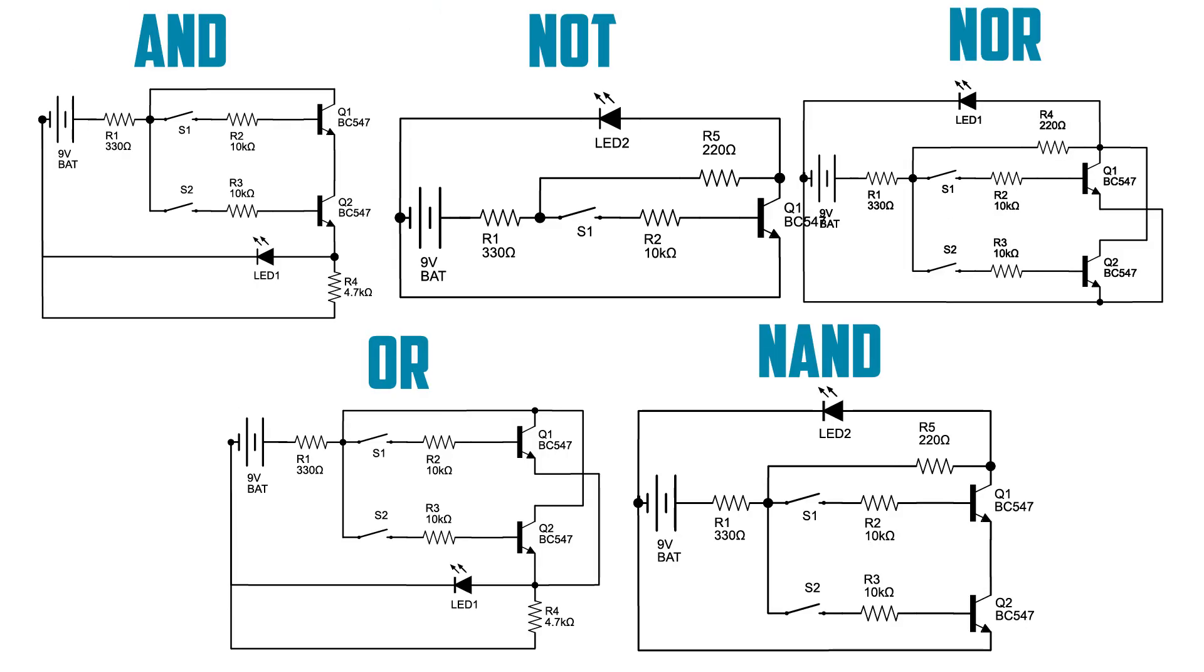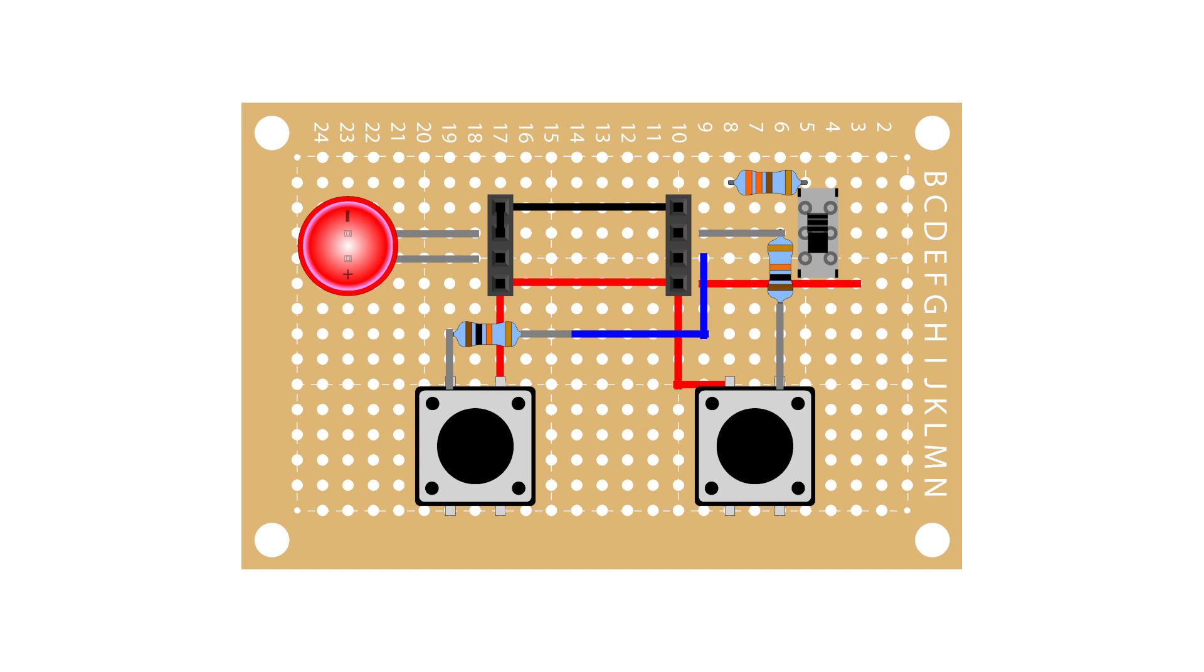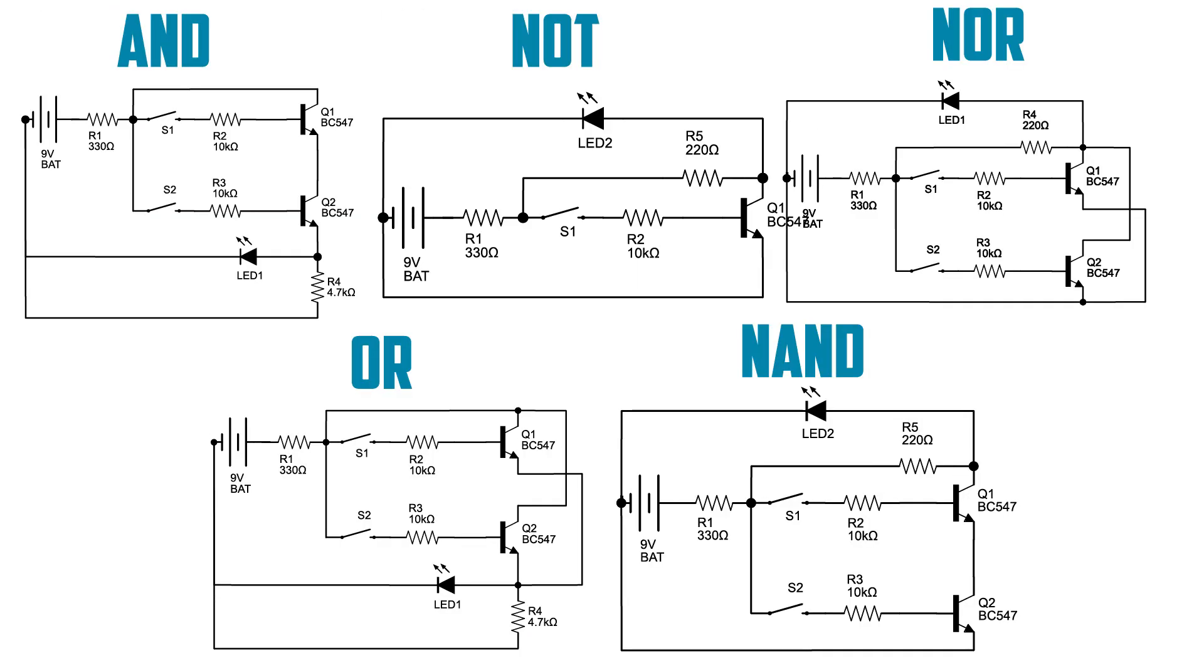If we look back at the schematic for all five gates, we can see that the battery, switches, 10K resistors, and LED stay fairly constant. These will go on the main board. The parts that change are the connections of the emitter and collector of the transistors, and resistor 4's value and position, so the gate boards will have the transistors and that floating resistor.